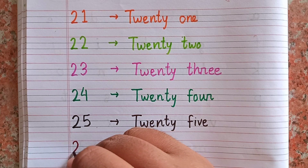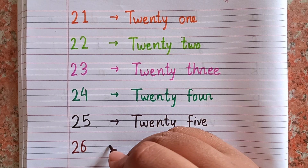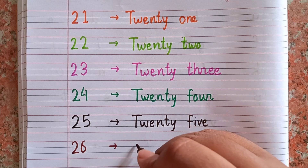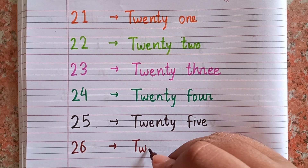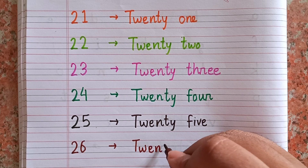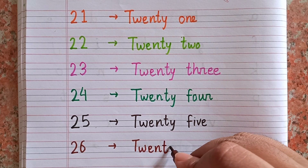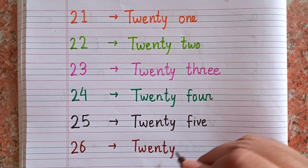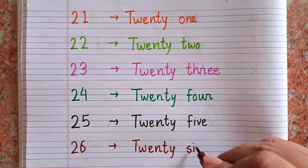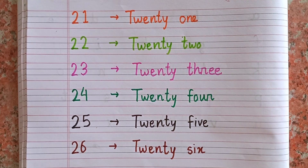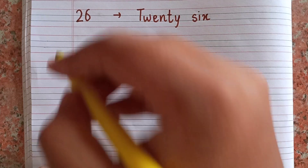After twenty-five, the next number is twenty-six — 2-6. The spelling of twenty-six is T-W-E-N-T-Y S-I-X. 26.